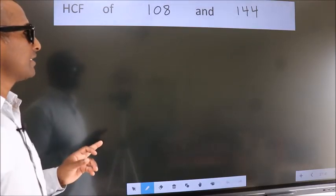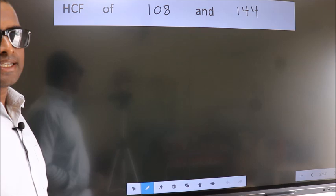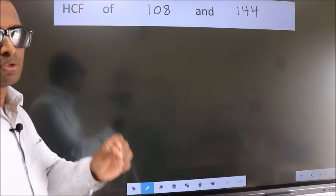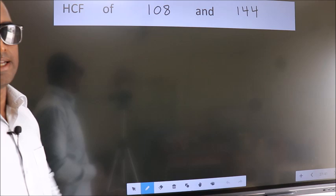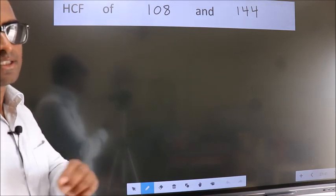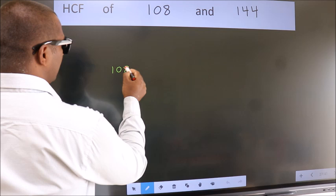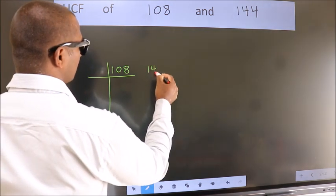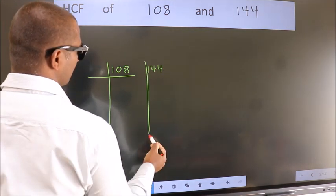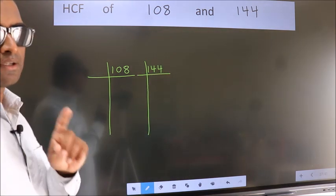HCF of 108 and 144. To find the HCF, we should do the prime factorization of each number separately. What I mean is 108 here, 144 here. This is your step 1.